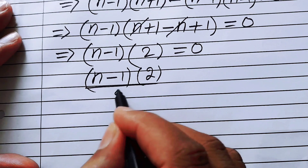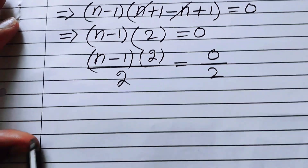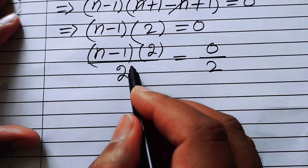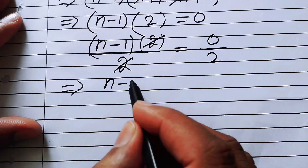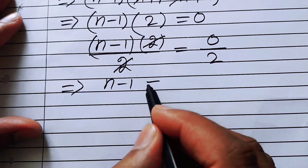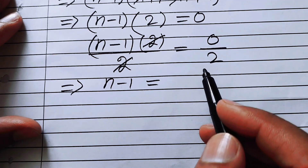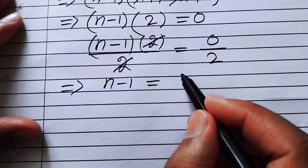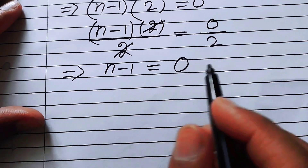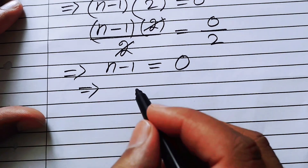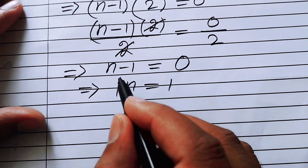Now we divide both sides by two, so n minus one times two over two equals zero over two. The two cancels and we get n minus one equals zero. Moving the minus one to the right hand side, we finally get the value of n equals one.